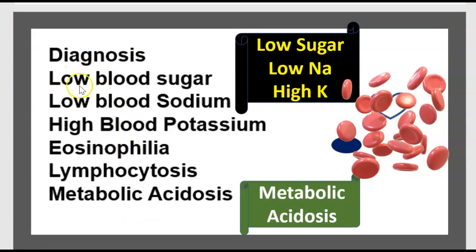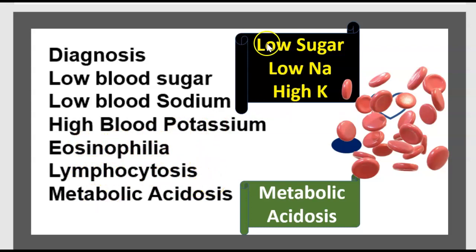Diagnosis: low blood sugar, low blood sodium, high blood potassium, eosinophilia, lymphocytosis, and metabolic acidosis. To summarize: low sugar, low sodium, and high potassium.